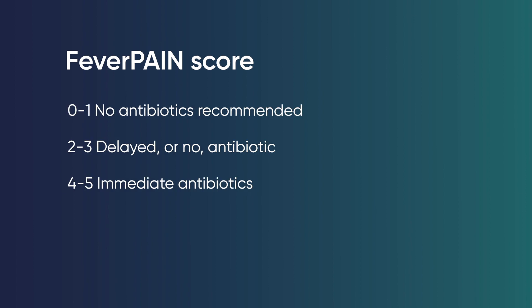If they score 0-1, the recommendation is they don't get any antibiotics, unless clinically you think they should. For two to three, it's a delayed script or no script at all for antibiotics. And four to five is a strong recommendation that you do give antibiotics.